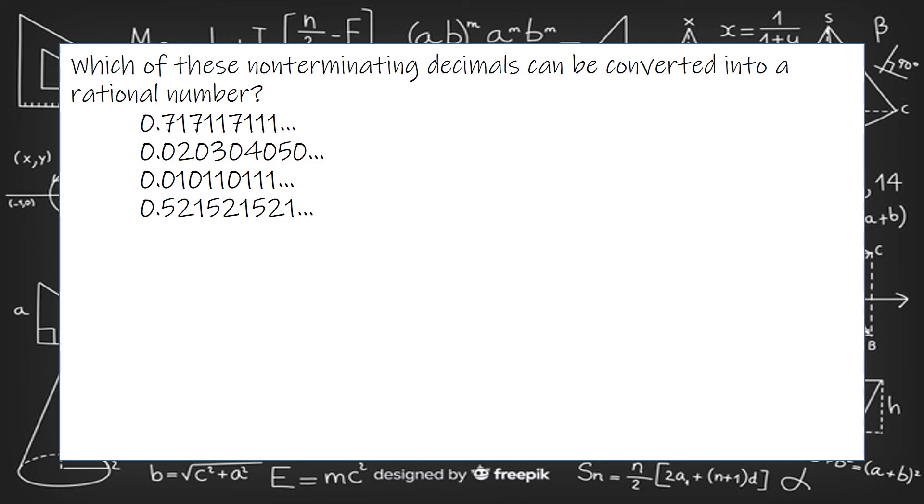Which of these non-terminating decimals can be converted into a rational number? Well remember, the non-terminating decimals that repeat can be turned into a rational number. So they have to repeat exactly. On the first option, you've got 0.717117111. This is not repeating exactly. So that can't be it.